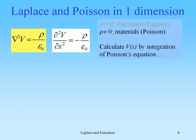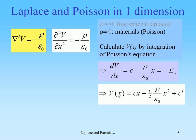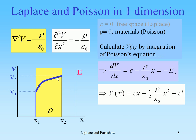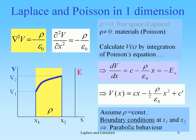Again, one dimension, but now with rho not equal to zero — in materials. We calculate V(x) by integration of Poisson's equation. This means dV/dx equals a constant minus rho over epsilon naught times x, which is also equal to minus the field strength Ex. Integrating again, V(x) equals Cx minus one-half rho over epsilon naught times x squared, plus another constant C'. With boundary conditions V1 at x1 and V2 at x2, you end up with parabolic behavior. A linear increase in E corresponds to a quadratic increase in V.